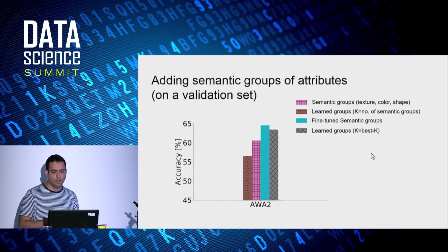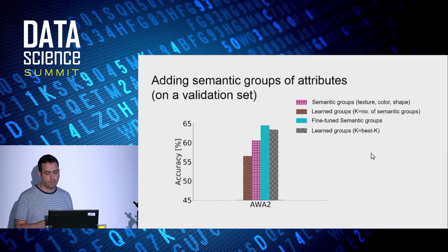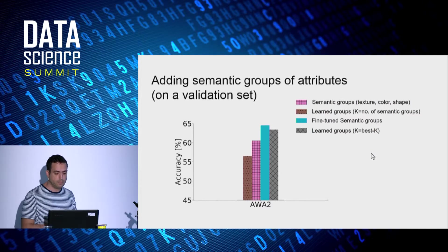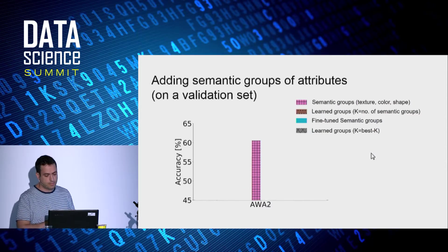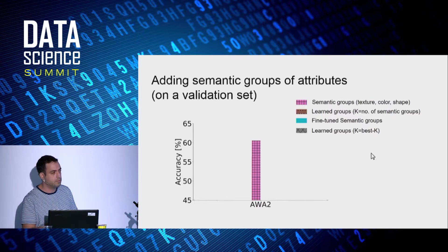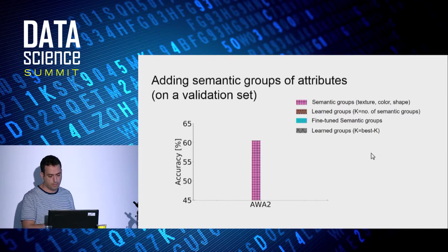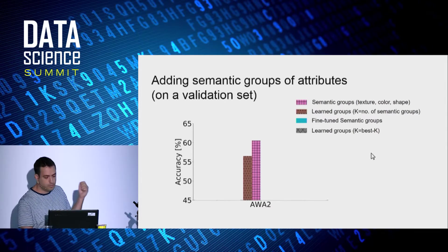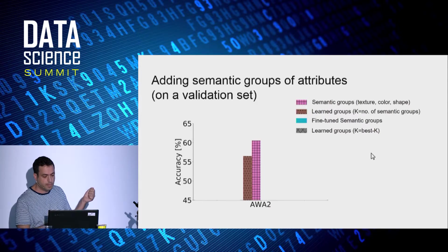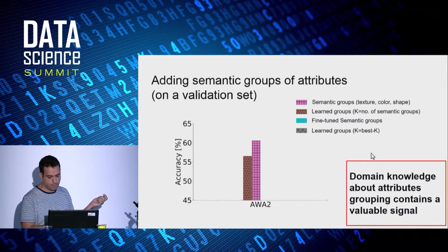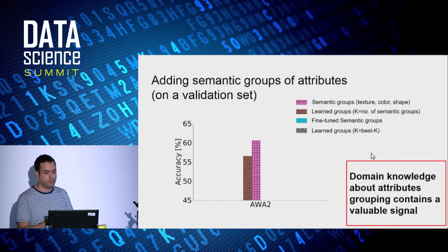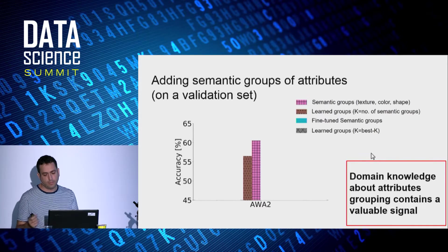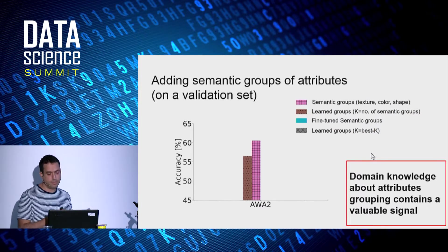In the second experiment, we compared what happens once we add the knowledge about semantic groups of attributes, groups like color, shape, texture. And we tested four variants of LAGO. So in the pink bar, we're using the knowledge about semantic groups of attributes, like texture, color, and shape. And in the brown bar, we learn the groups from data. So we choose k as the same number of semantic groups as in the pink bar. And what this means is that when we compare the brown bar to the pink bar, this shows that domain knowledge about attributes grouping, like texture or shape, can contain valuable information, it contains a valuable signal.